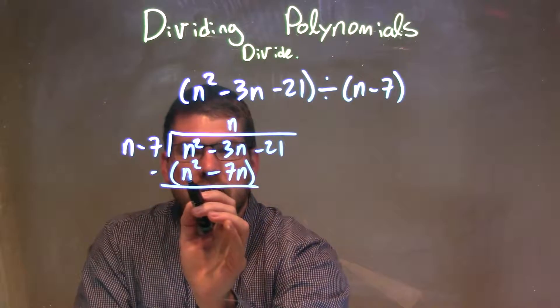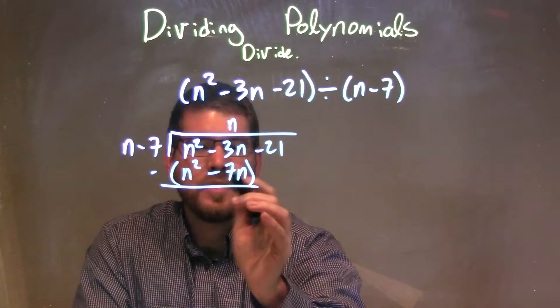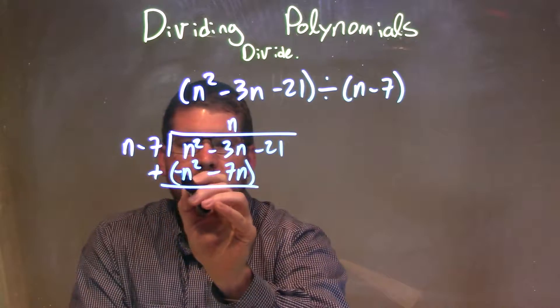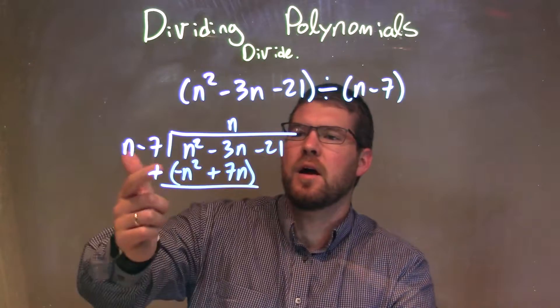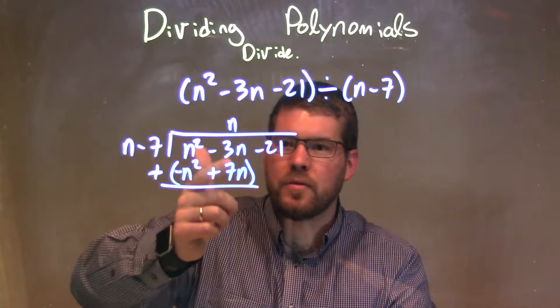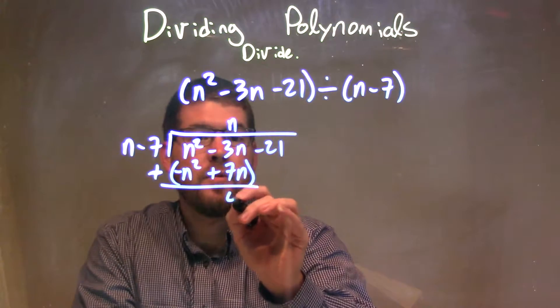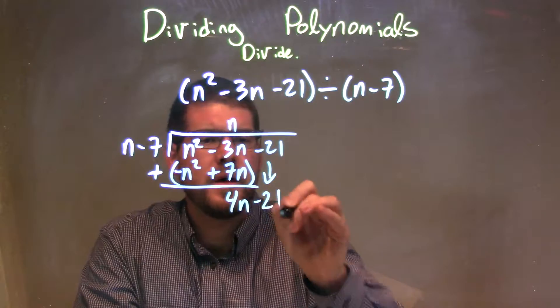n squared minus n squared, which is 0, great. But minus 3n minus a negative 7n, sometimes I like to distribute this minus out, say like this, minus, and negative plus, makes it easier to see. So now we're adding it. We have a minus n squared, great, right there. We'll eliminate minus 3n plus 7n is just a 4n, positive 4n. And then I bring down the minus 21, and we do this again.